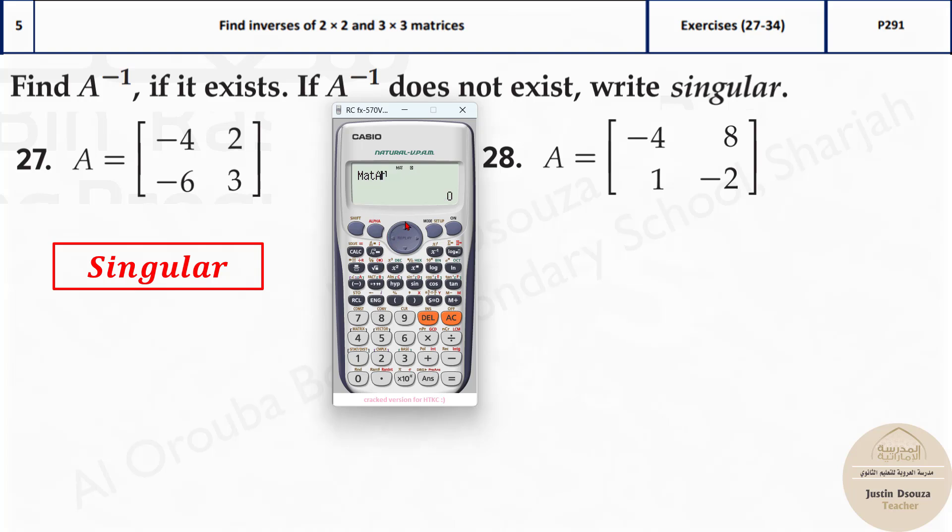Now if you want to double check the determinant is 0, what I can do is, I will just clear it out. You can press SHIFT and 4. There is option number 7 for determinants and then again SHIFT and 4. Press MATRIX A, close the bracket. Here the determinant is 0. If determinant is 0, the matrix is singular. Or if you get MATH error, that means it is singular.